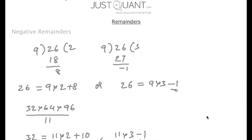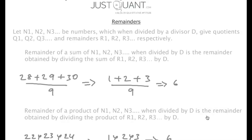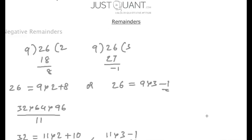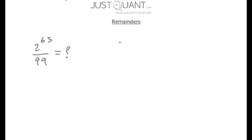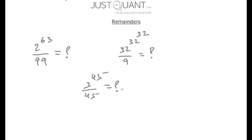In this video we had a look at the concept of negative remainders, and we also saw how to calculate the remainder of a sum of n numbers when divided by d, and the remainder of a product of n numbers when divided by d. Using these ideas, can we calculate the remainder of 4 to the power of 63 divided by 99, or 32 to the power of 32 to the power of 32 when divided by 9, or 3 to the power of 45 divided by 45? In my next video I'll try to address these problems and look at a few more concepts in remainders.